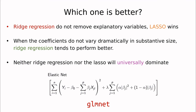Maybe we don't need to choose. Trevor Hastie, a wonderful mathematician and machine learning expert, introduced the Elastic Net — taking the best of both worlds. It uses a parameter alpha: if alpha equals one this reduces to Ridge regression, and if alpha equals zero it becomes the Lasso. With cross-validation we can tune not only the penalty lambda but also the relative weight alpha between the two methods.